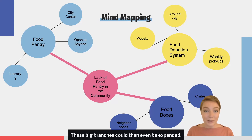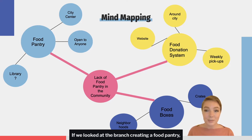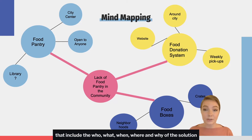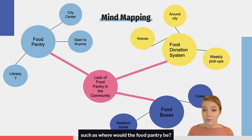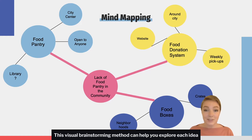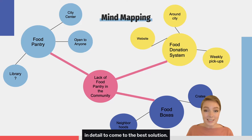These big branches could then even be expanded. If we looked at the branch of creating a food pantry, we could create smaller branches from this that include the who, what, when, where, and why of the solution — such as where would the food pantry be, what would the food pantry look like, and who would maintain it. This visual brainstorming method can help you explore each idea in detail to come to the best solution.